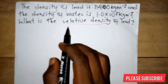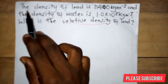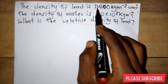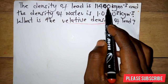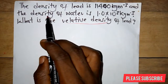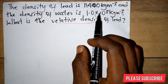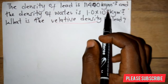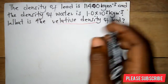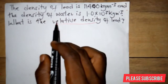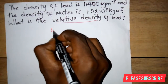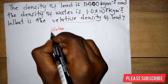The question says: the density of lead is 11,500 kilograms per meter cube, and the density of water is 1 × 10³ kilograms per meter cube. The question asks: what is the relative density of lead?